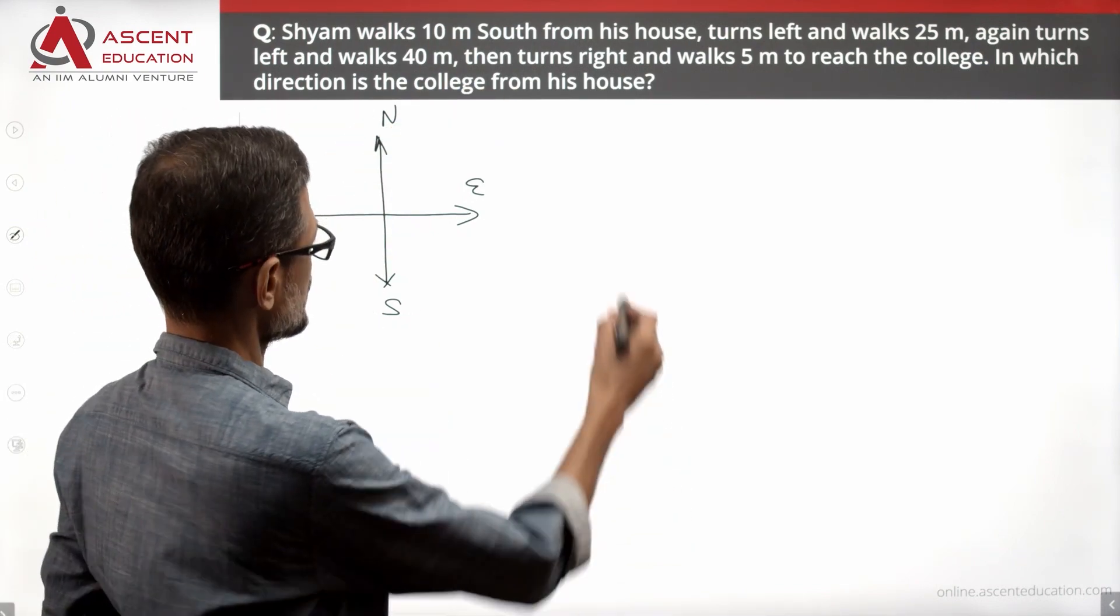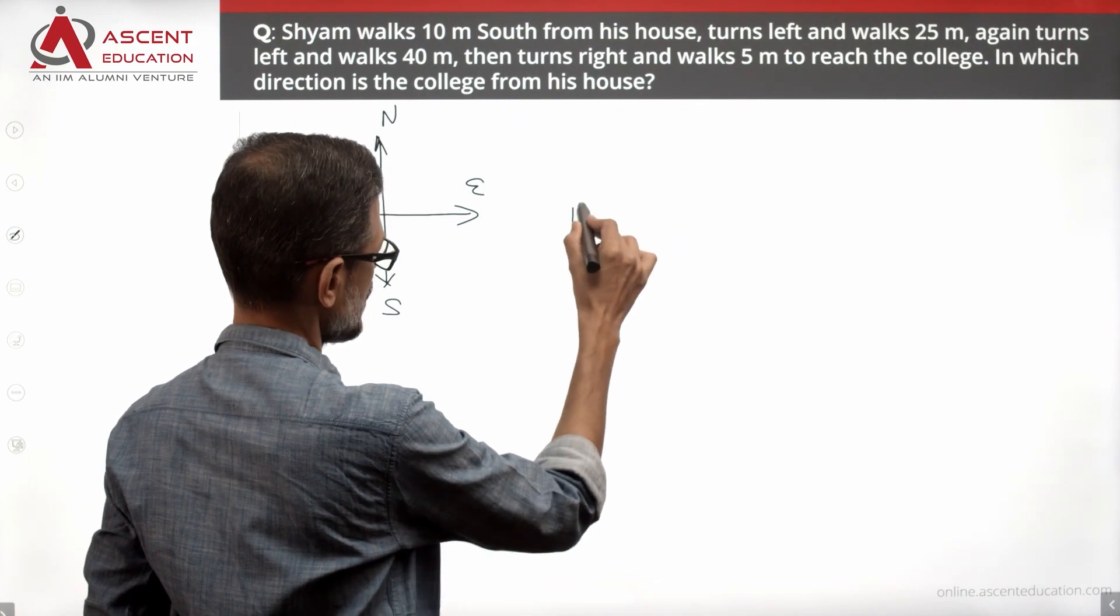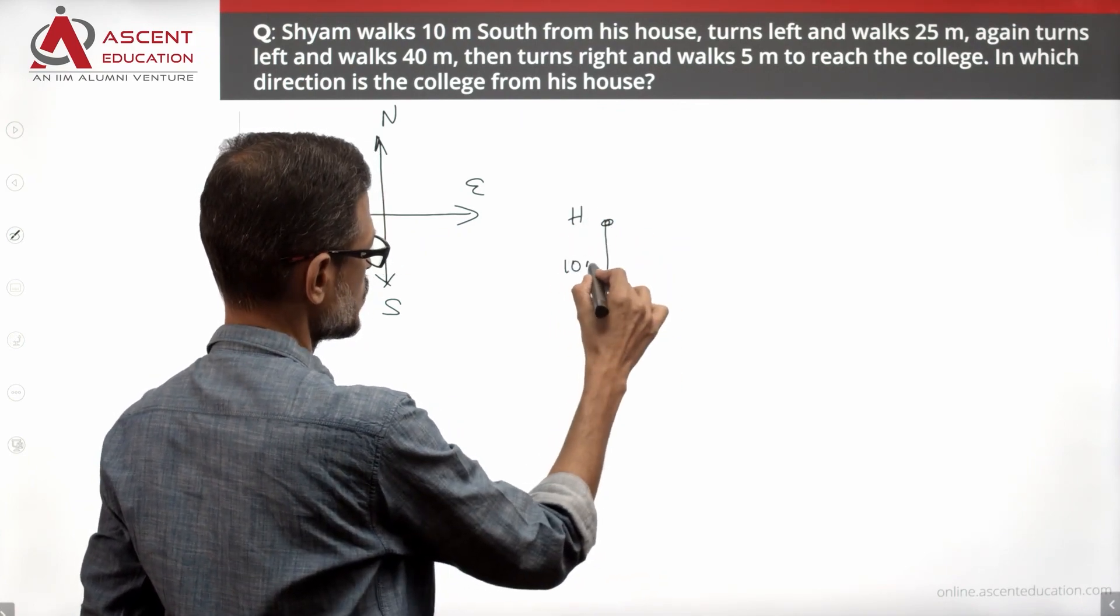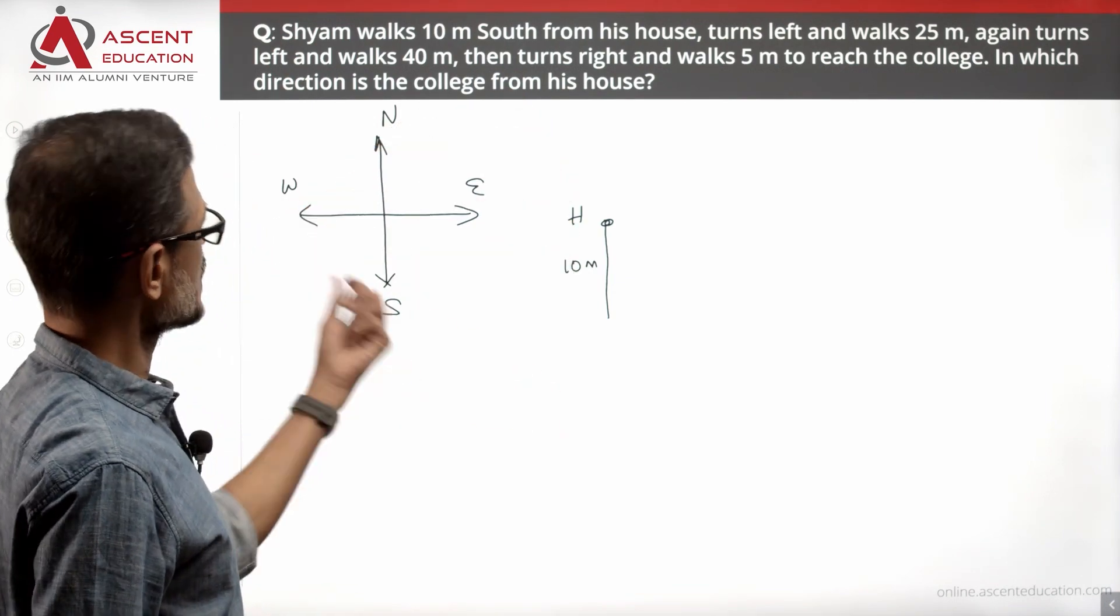Sham walks 10 meters south. So let's assume he is here. This is the house. He is walking 10 meters to the south. South is downward.